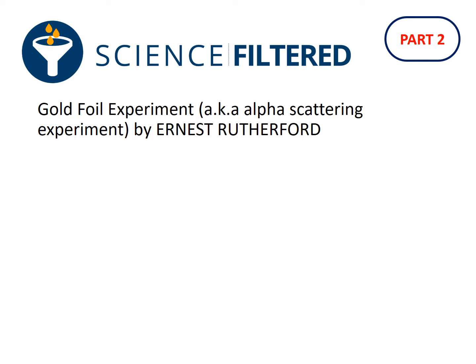What actually happened when the gold foil experiment was conducted? Let's have a look. If we bring back the diagram of our atom — what we believed the atom looked like — we've got those negative electrons and we've got that spread out positive charge.